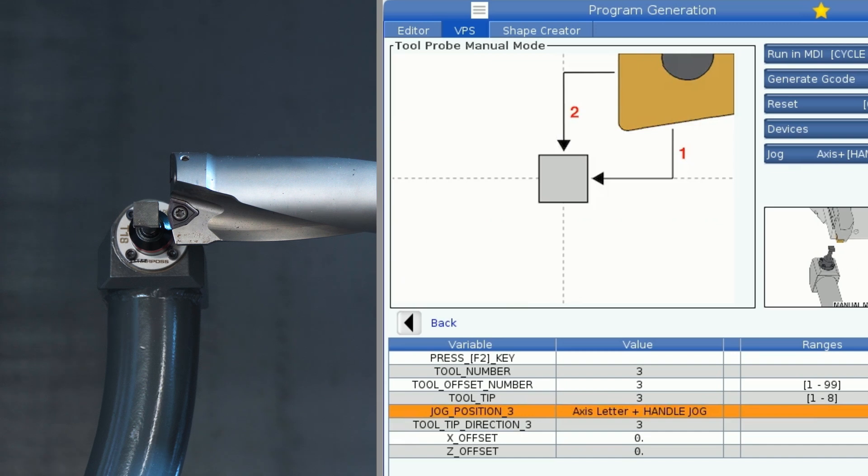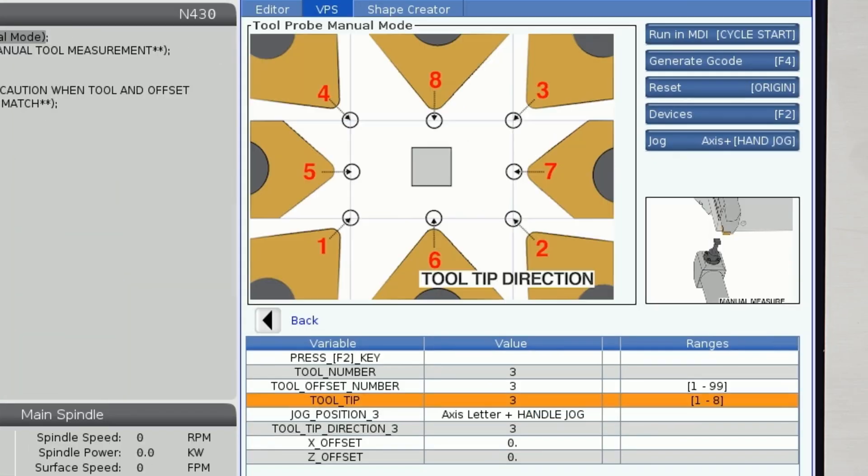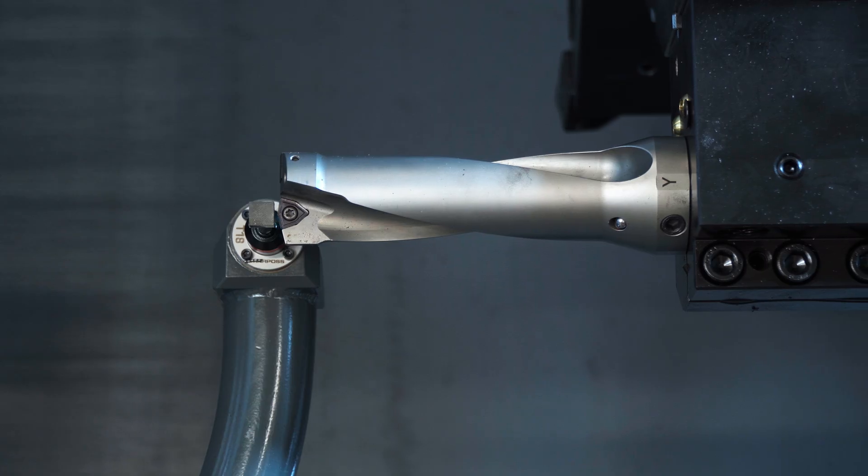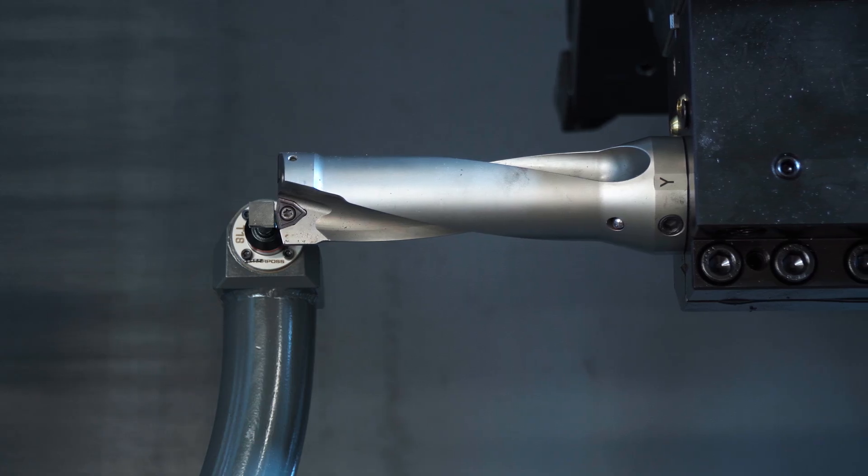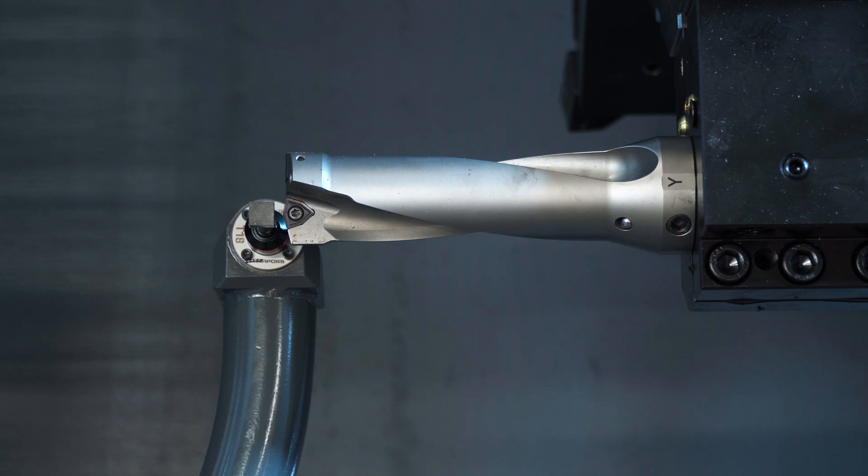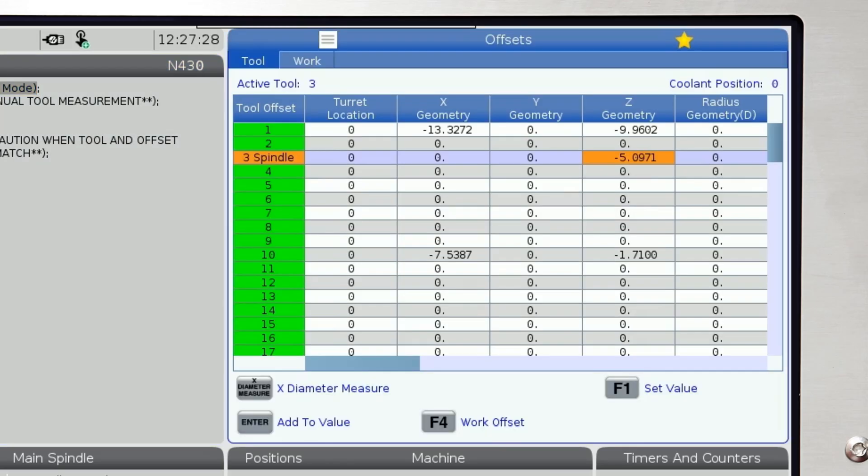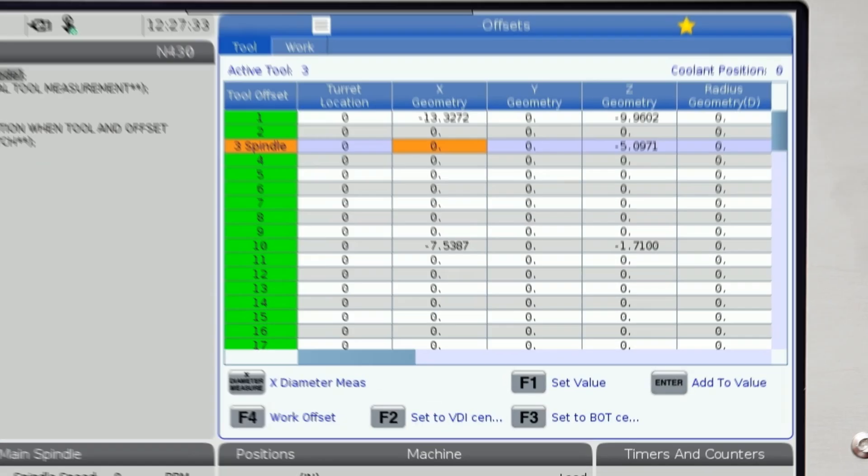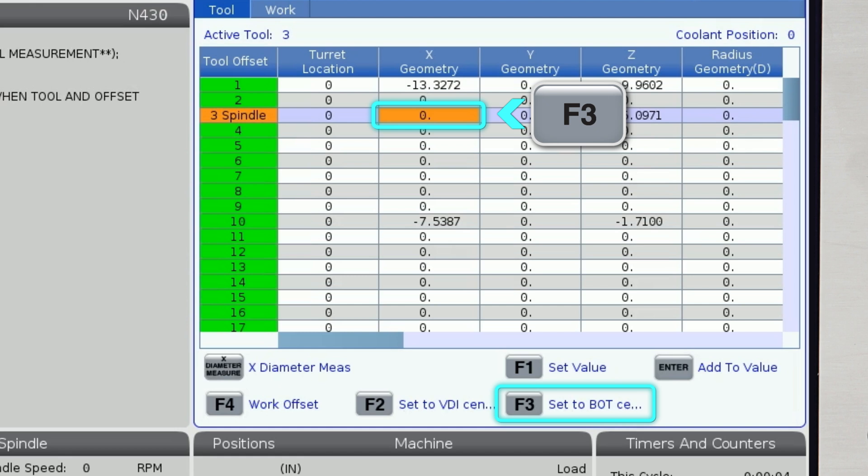Again, we enter our tool info and tip direction. Since it's a drill, we'll use number 7 for a single Z axis touch off. Cycle start again to run automatically in MDI and our Z offset is updated. Then, we go to the offsets page and press F3 to set the X center line position for the drill.